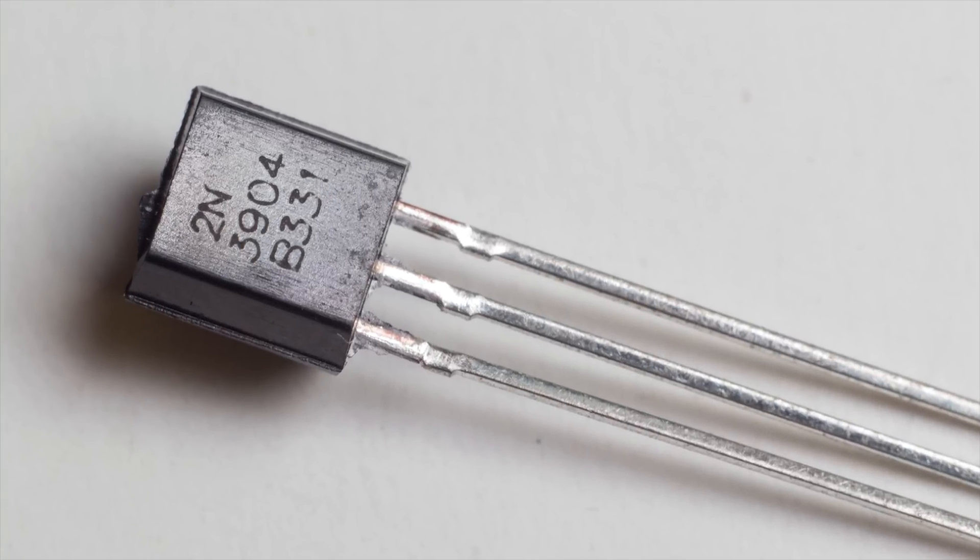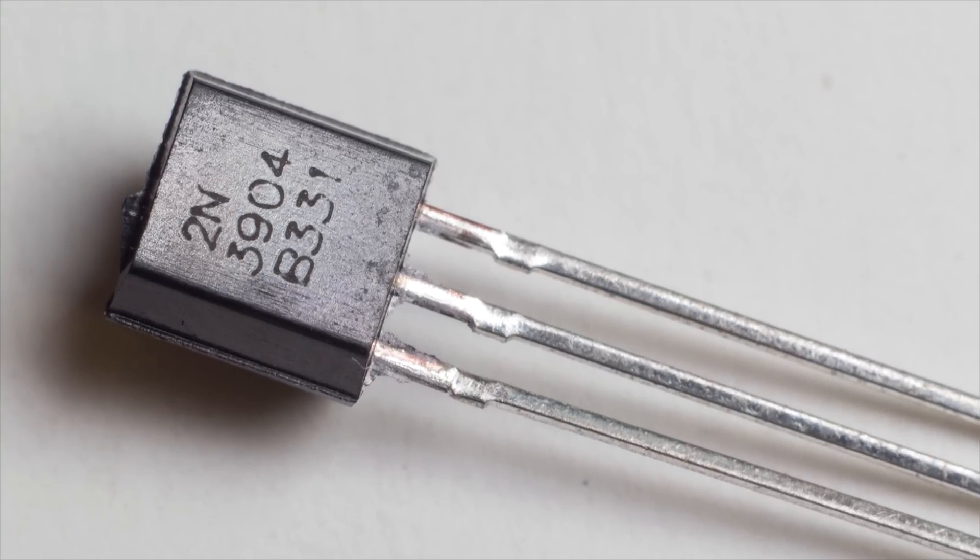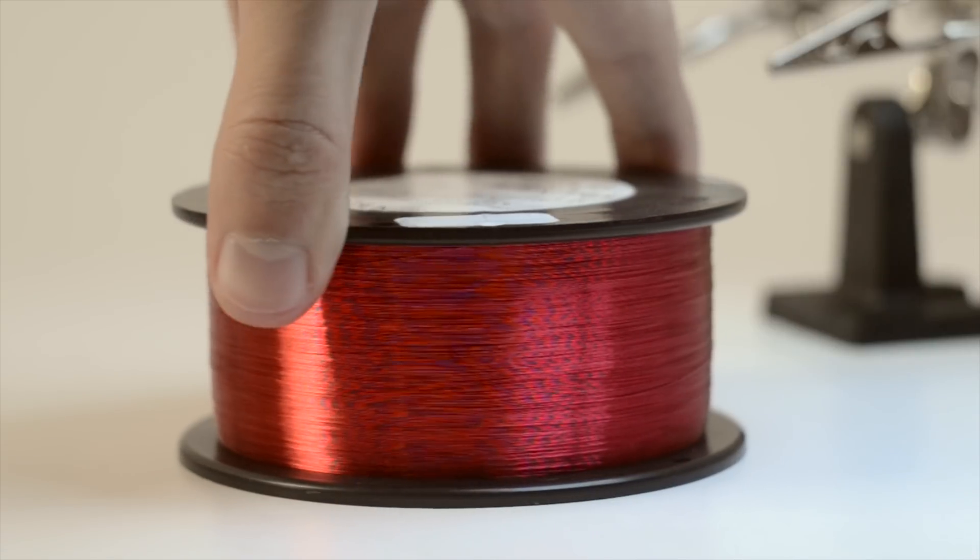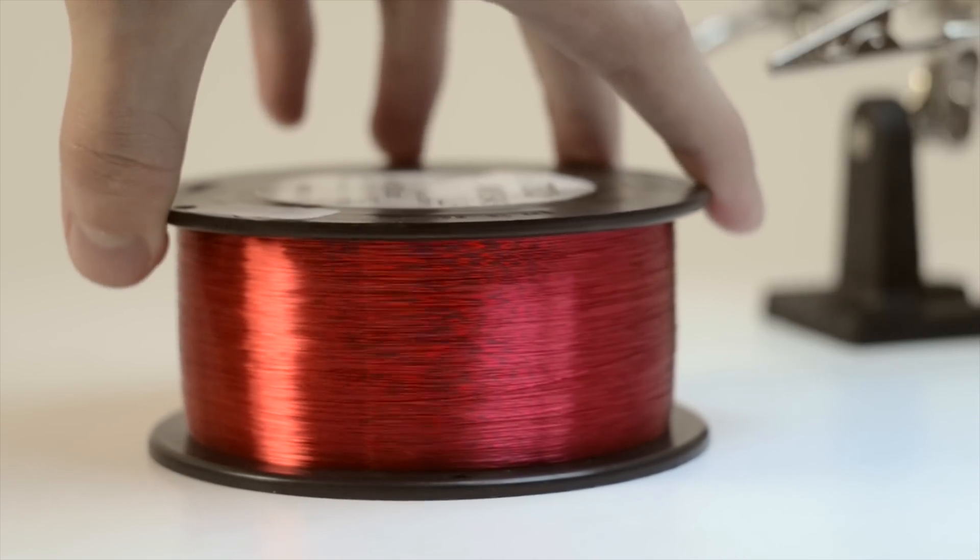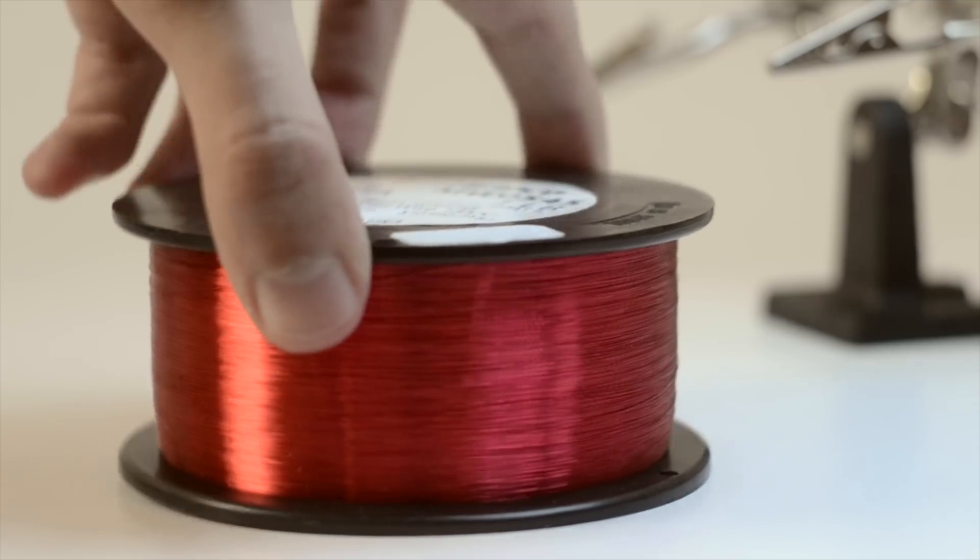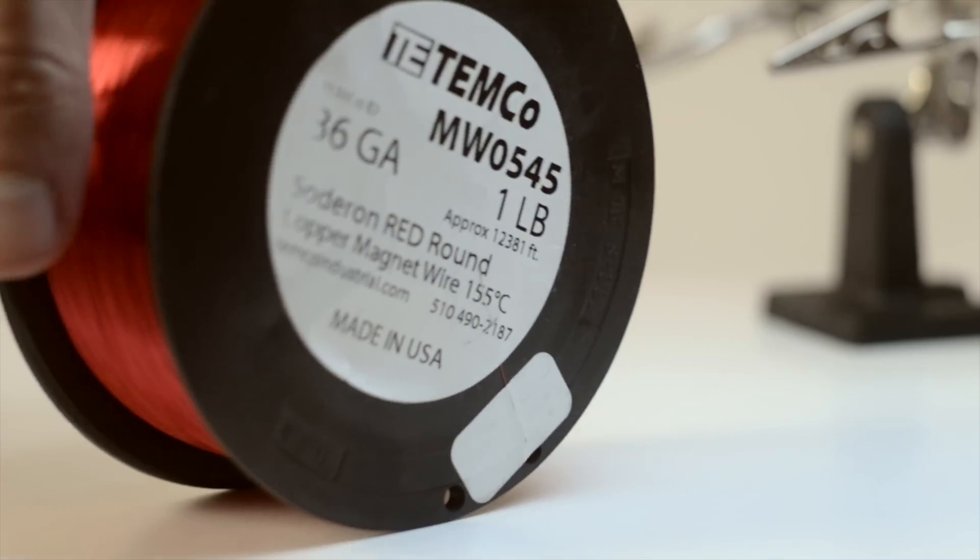We need transistor 2N3904, or almost any similar NPN transistor, any LED, also we need copper winding wire, 0.1 to 0.5 mm, about 15 meters. I use 0.13 mm, or 36 American wire gauge, if you like.